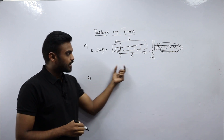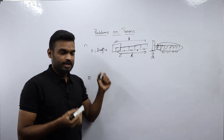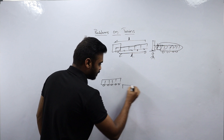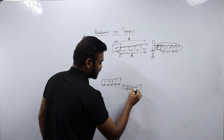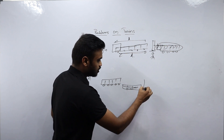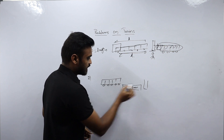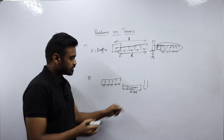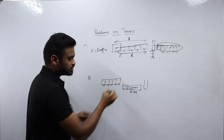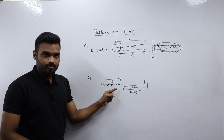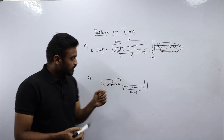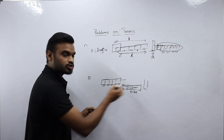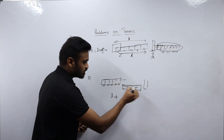Now consider another example to understand the exact difference between speed, time and distance and problems on trains. Suppose there is a train and also a platform. This is the railway station platform. The platform length is 10 kilometers, and there is a pole beyond the platform. This train needs to cross the pole. In order to do that, the train must first cover the total distance of the platform and then the total length of the train.